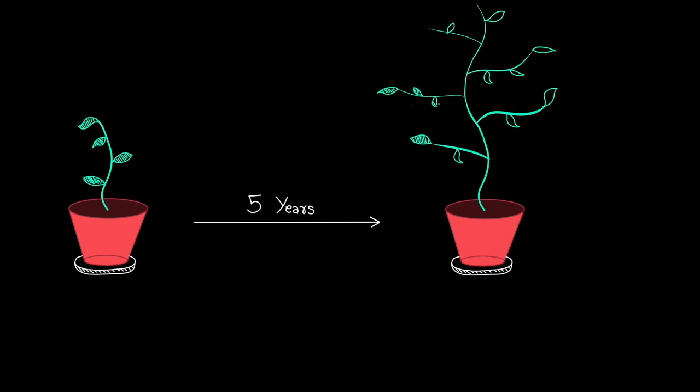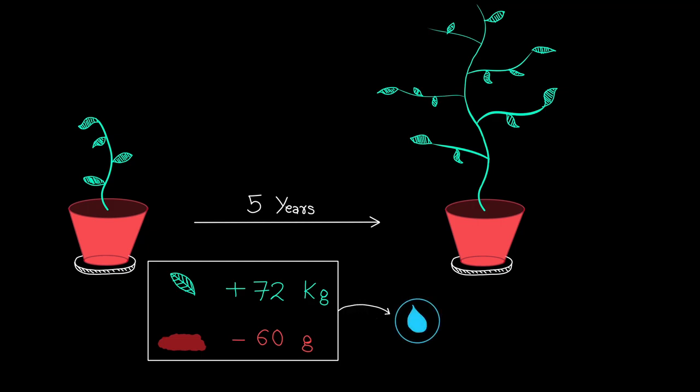So again, he measured the mass of the tree by removing it from the soil. He saw that the mass of the tree had increased by 72 kilograms, which was expected. However, the mass of the soil only decreased by 60 grams, which was shocking. The decrease in soil could not explain the increase in the mass of the tree.